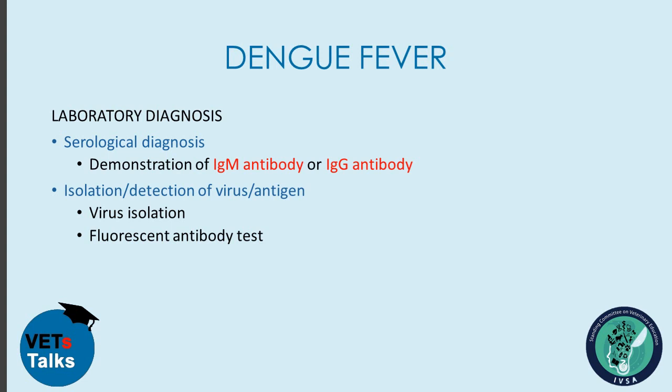Laboratory diagnosis of dengue fever can be done through serology — that is, demonstration of immunoglobulin M or immunoglobulin G antibodies in the system. It can also be done through isolation or detection of the virus or antigen. Virus isolation and fluorescent antibody tests can also be used to confirm the presence of dengue fever in the patient.